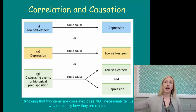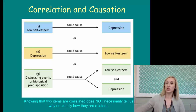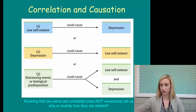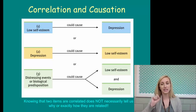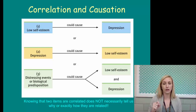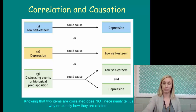Even then, some outside variable not discussed in that relationship could cause both items. Knowing that two items are correlated does not necessarily tell us why or exactly how they are related — we just know they are related.